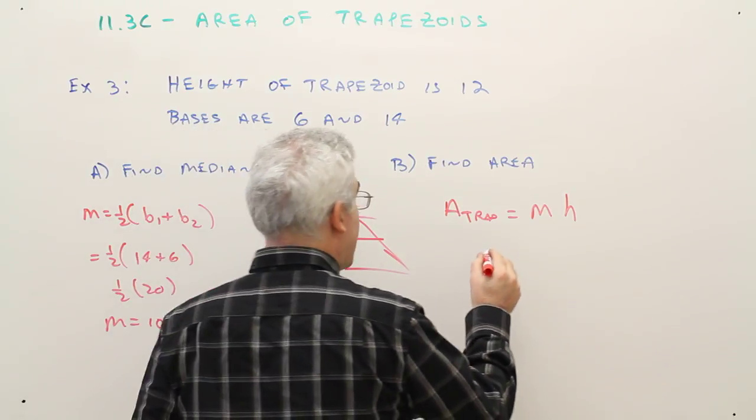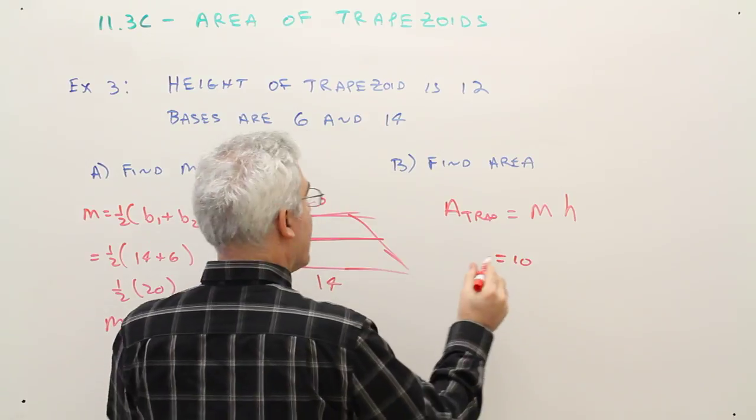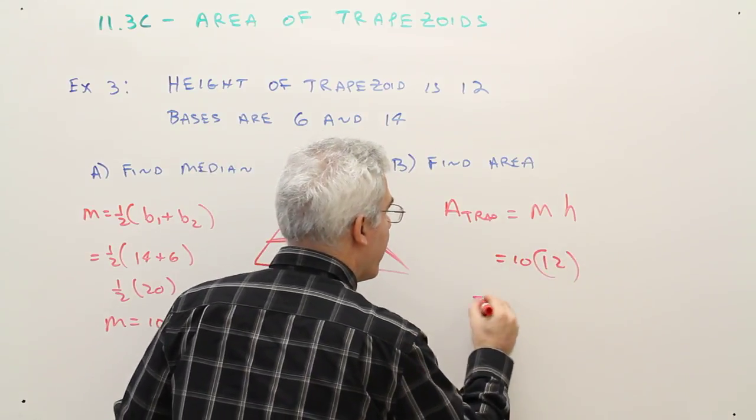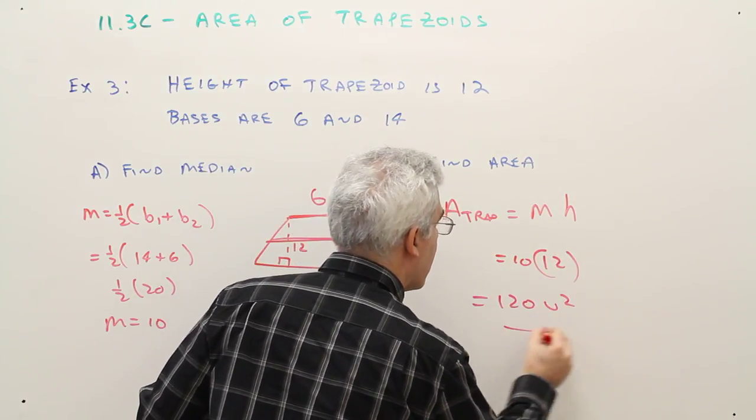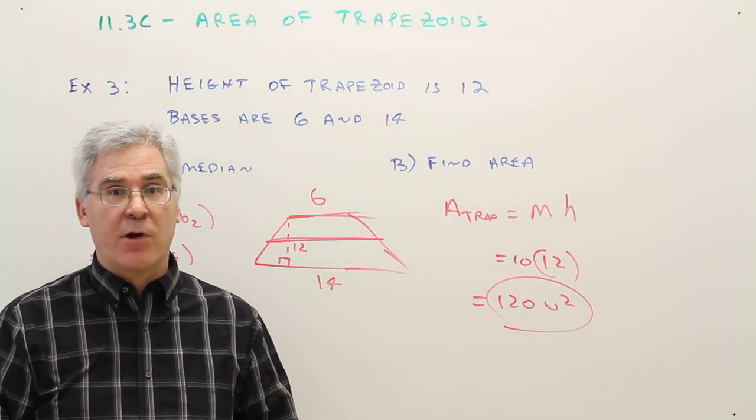So it would now be equal to 10 times 12, which would be 120 units squared.